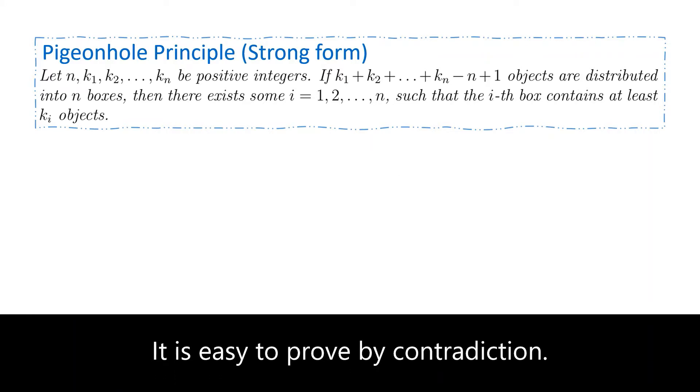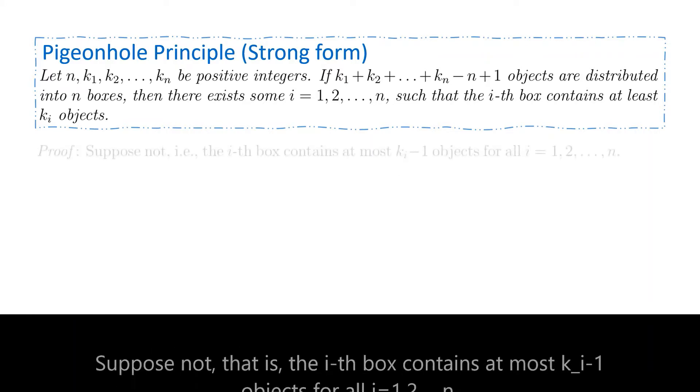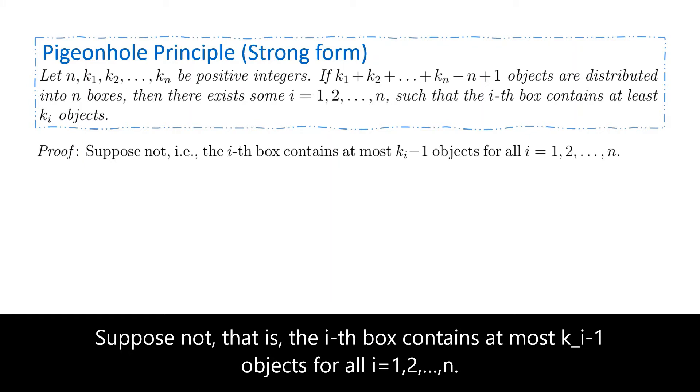It is easy to prove by contradiction. Suppose not, that is the i-th box contains at most ki minus one objects for all i.